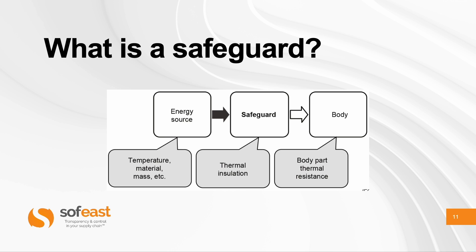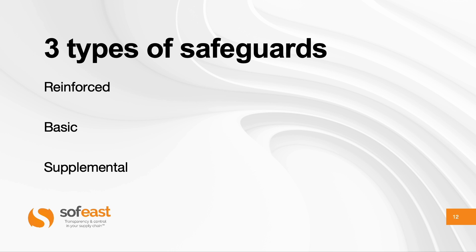Another very important concept is the safeguard. You have an energy source that transfers to the body — that's a hazard. You put a safeguard in place: for example, if the product is very hot, you insulate it to protect the body. A safeguard avoids, mitigates, or makes it less likely that the hazard and its effects — injury, fire, etc. — occur. There are three types of safeguards: reinforced, basic, and supplemental.